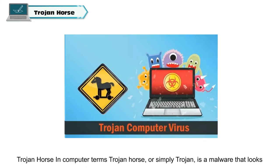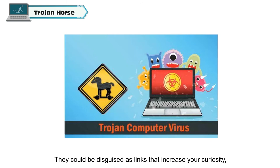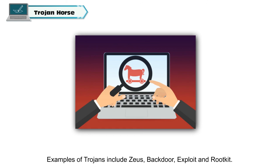Trojan Horse. In computer terms, a Trojan Horse or simply Trojan is a malware that looks legitimate and useful but is actually designed to harm your computer. They could be disguised as links that increase your curiosity, extra fields in a web form, or the interface of a program that you use. When computer users click on them, the Trojans install on their system. Examples of Trojans include Zeus, Backdoor, Exploit and Rootkit.